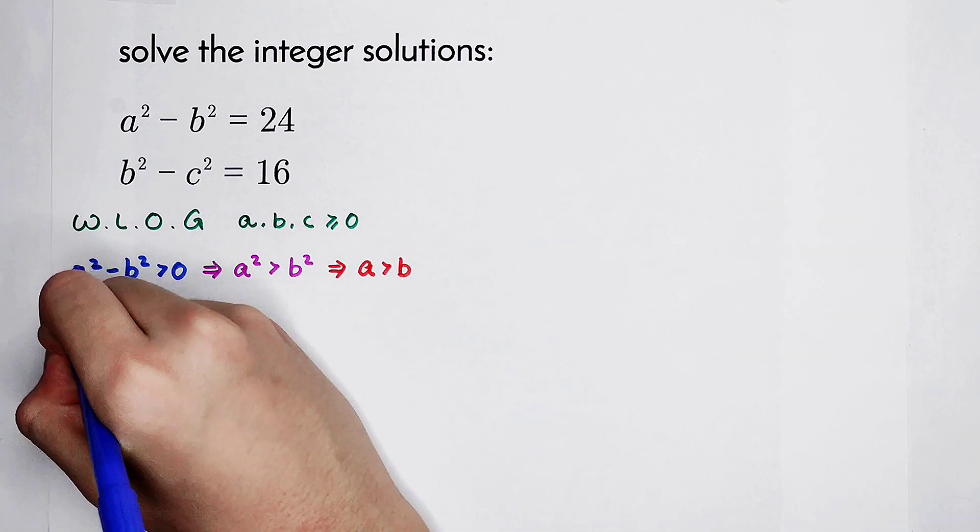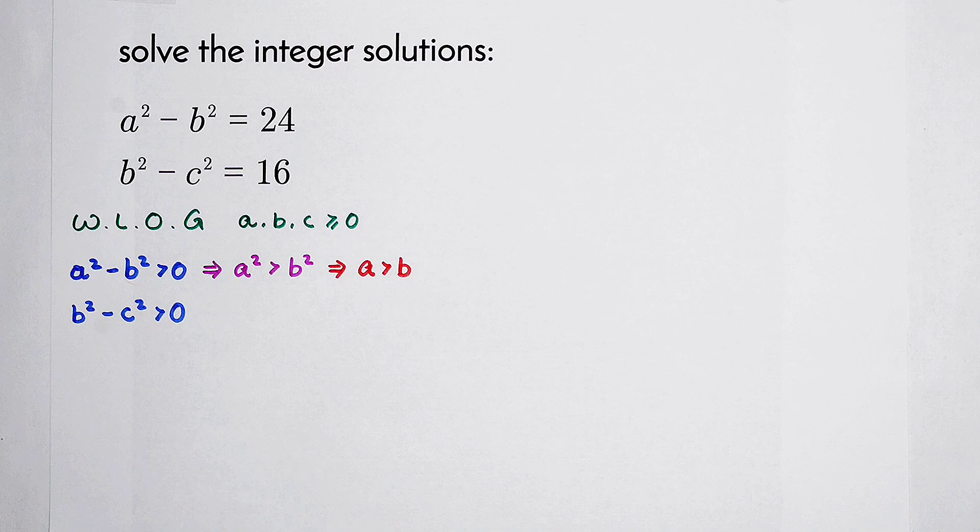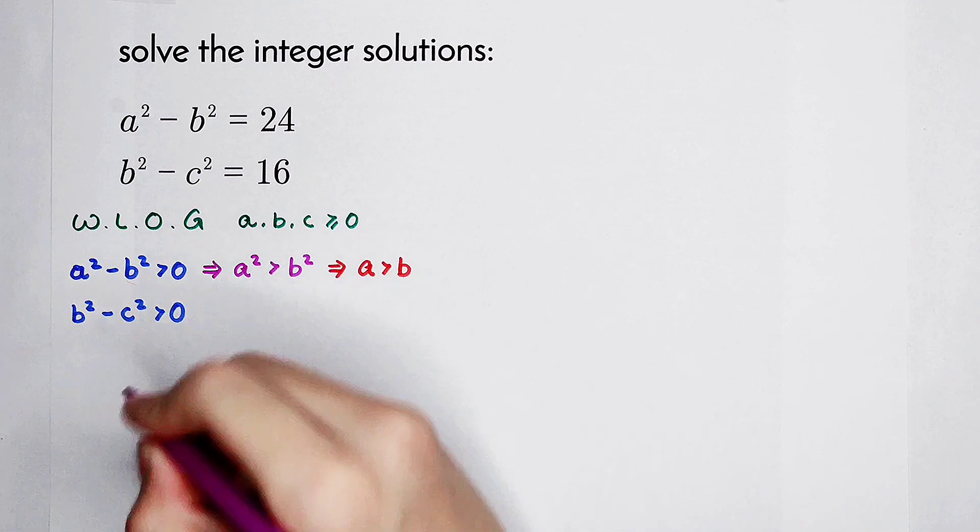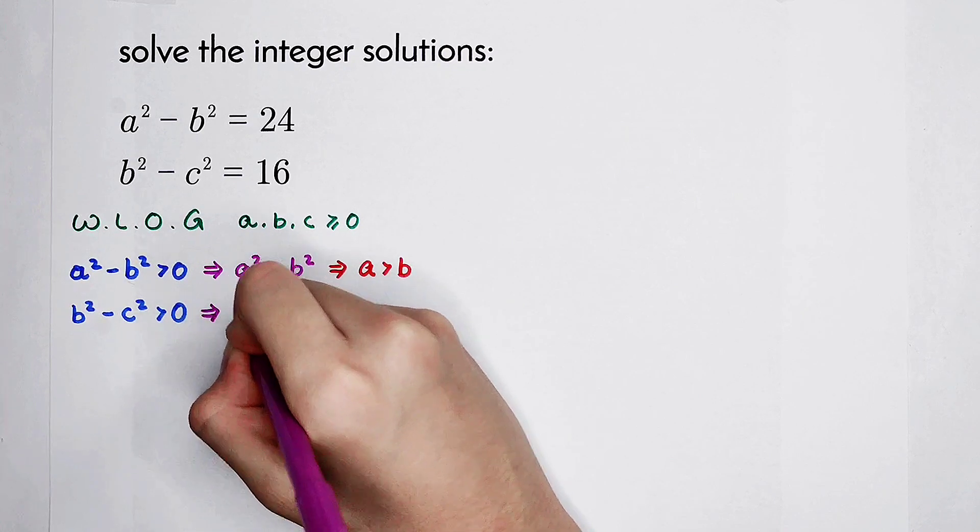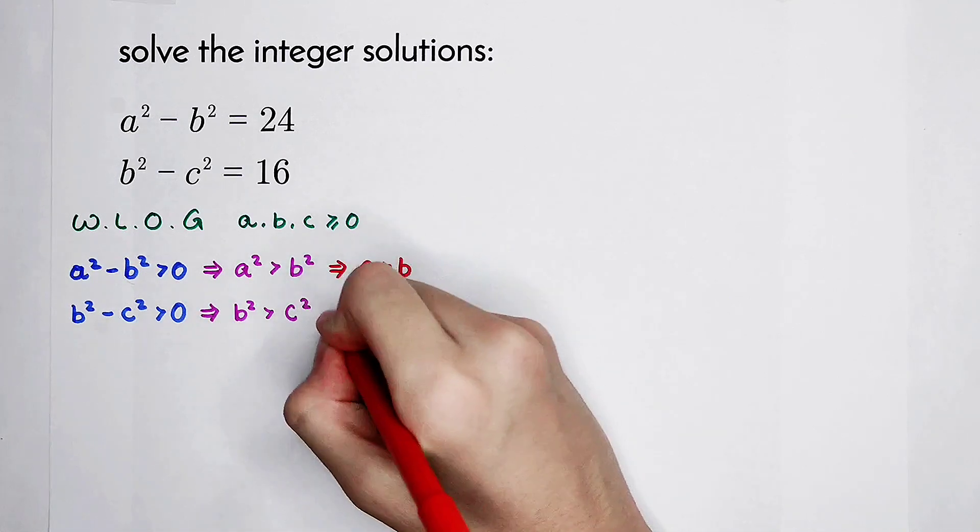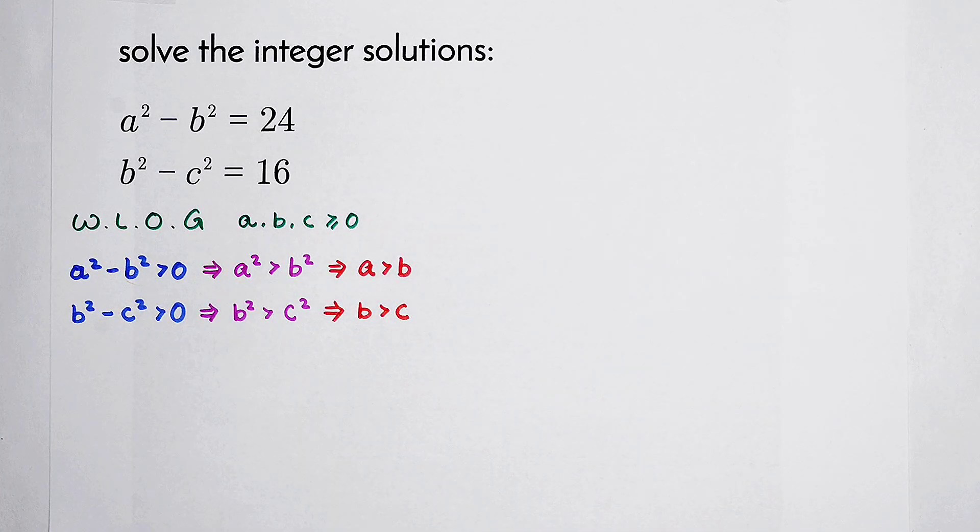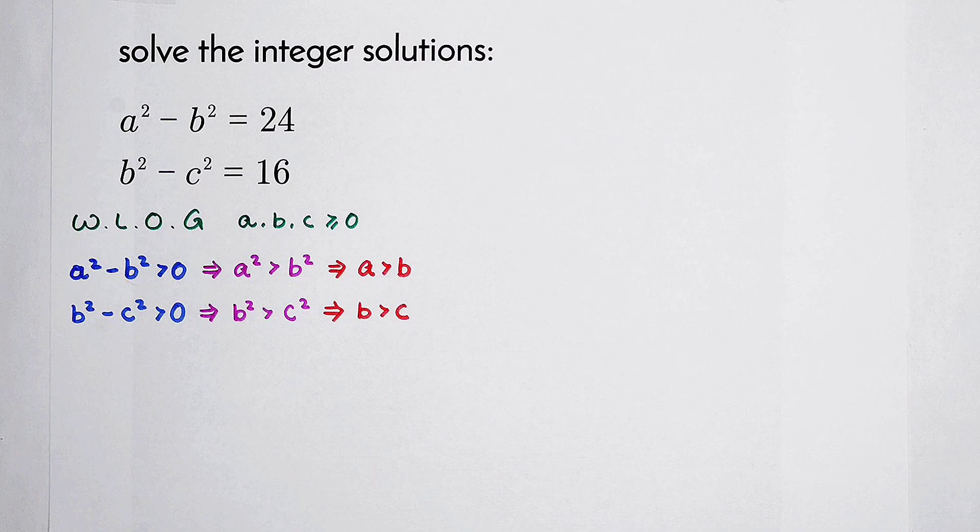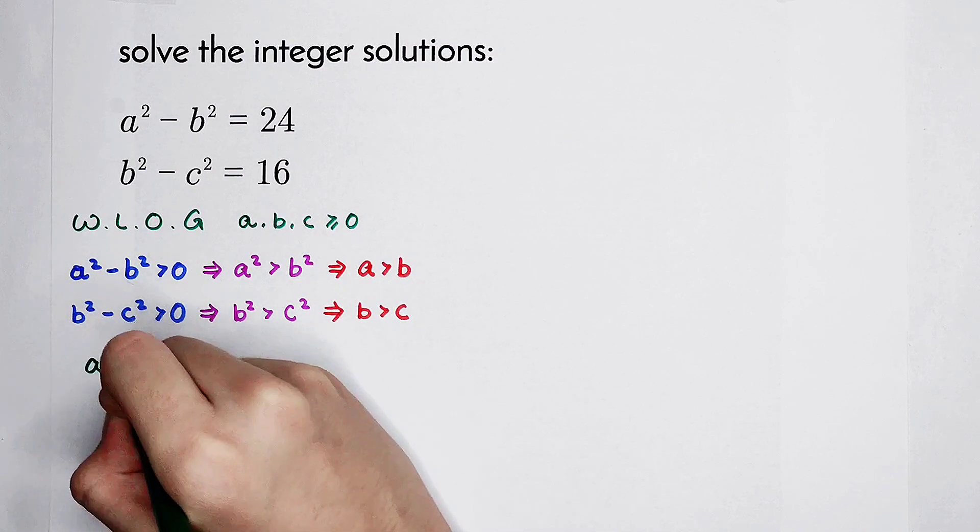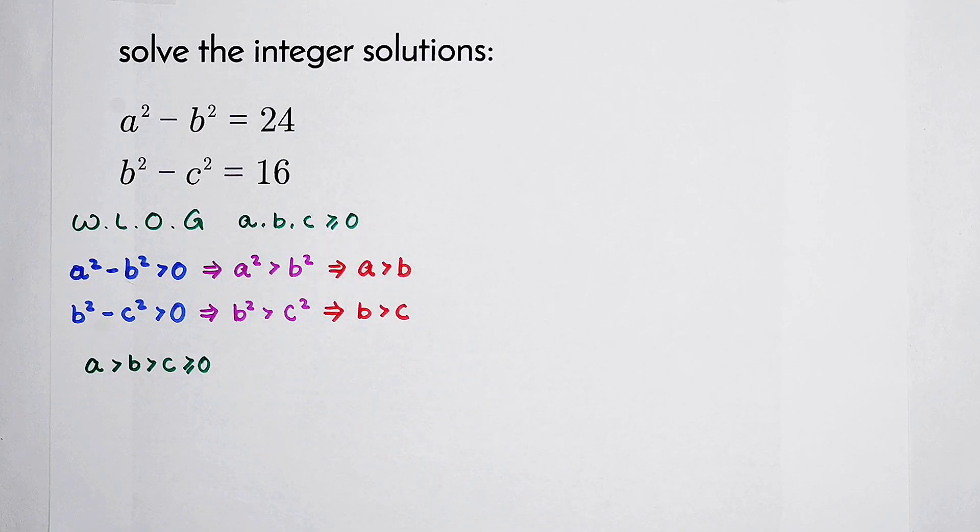From the second equation, b squared minus c squared is also bigger than zero because 16 is a positive integer. So we can get b squared is greater than c squared, and b is greater than c. A is greater than b, b is greater than c. So now we get a is greater than b is greater than c is greater than or equal to zero.